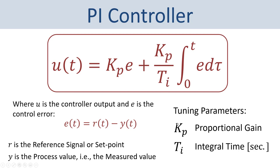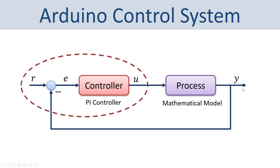For this PI controller we have two tuning parameters: Kp, which is the proportional gain, and Ti, the integral time. E is the error between the reference value R (the setpoint — the value we want the process to stay on, for example a temperature of 25 degrees Celsius) and Y, the measured output of the process. We want this measured value to be on the setpoint. Based on the error between the measured value and the reference value, the controller calculates a proper control signal that it applies to the process.